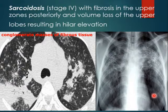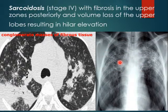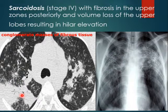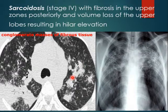Here is an example of Stage 4 sarcoidosis with fibrosis in the upper zones posteriorly and volume loss of the upper lobes resulting in hilar elevation. On the chest X-ray you can see upper and middle lung zone interstitial fibrotic changes and elevation of the hilum on both sides. On CT scan, there are conglomerate masses of fibrotic tissue mainly in the posterior aspect of the upper lobes. On the coronal view, both hila are elevated due to volume loss and fibrosis.